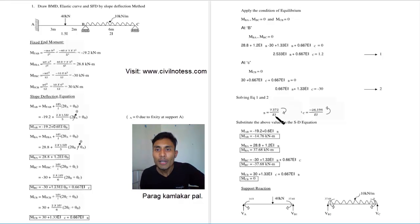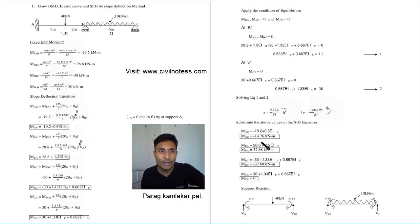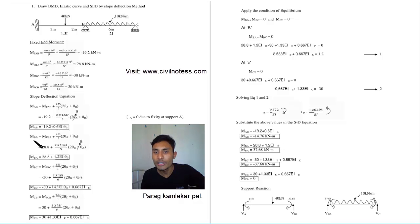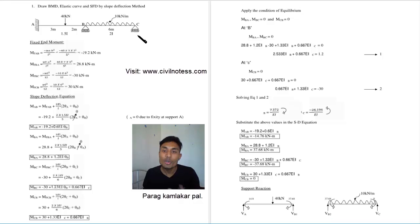Now we substitute θ_B and θ_C back into the slope deflection equations. Place the values of theta B and theta C into each moment equation. The EI terms cancel and you get numerical values for each moment. Moment of CB comes out to zero, which sometimes happens depending on the problem conditions.